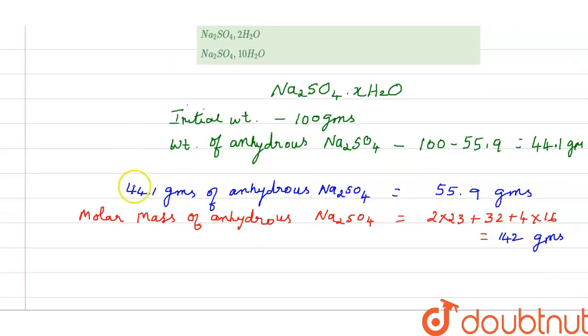So we already have this 44.1 grams of anhydrous sodium sulfate associated with water is 55.9 grams. Let us find by unitary method. Therefore, 142 grams of anhydrous sodium sulfate equals, when we are equating with this unitary method we are following, 55.9 into 142 divided by 44.1. When you calculate, you get over here 180 grams.